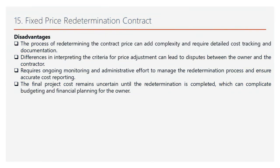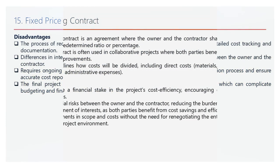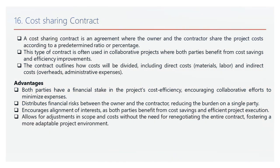Understanding these drawbacks can help you prepare better strategies for managing a fixed price redetermination contract. Let's now discuss the cost-sharing contract, an agreement designed to promote collaboration and shared responsibility in project execution. A cost-sharing contract is an agreement where the owner and the contractor share the project costs according to a predetermined ratio or percentage. The contract outlines how costs will be divided, including direct costs such as materials and labour, and indirect costs like overheads and administrative expenses.